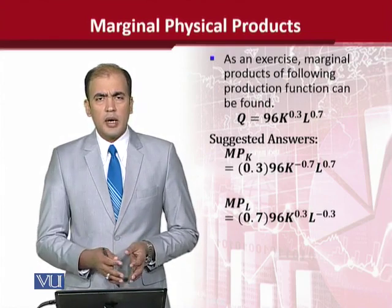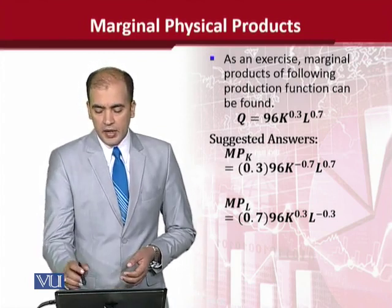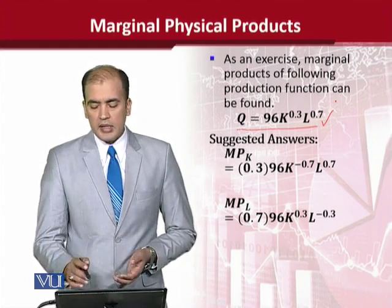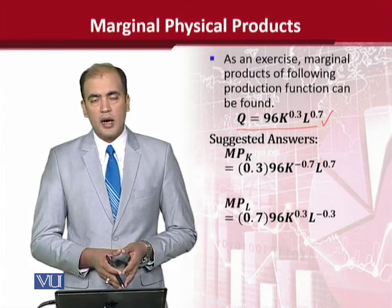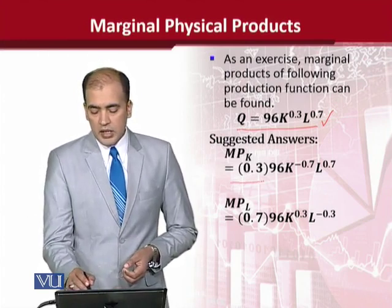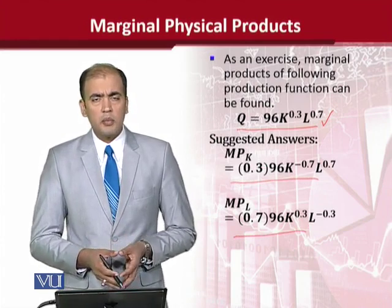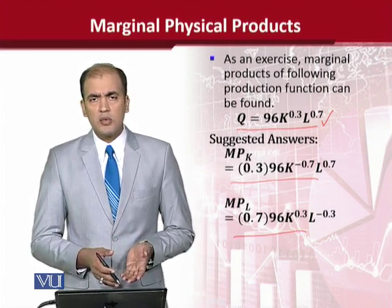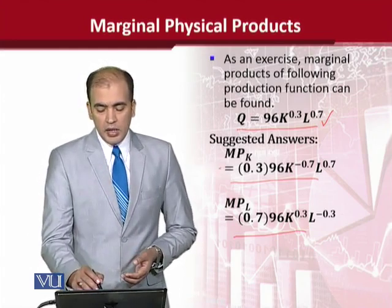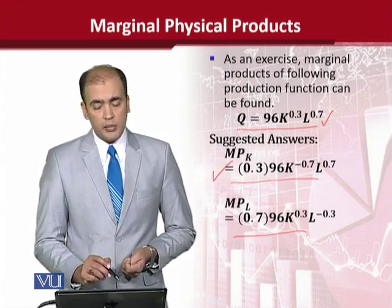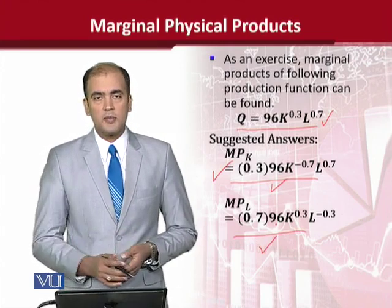Now we should also do a numerical exercise, which I will show you partially and the rest you can do as practice. In this case you have a numerical example of the production function with capital and labor, and you can determine the output. A simple method is to take the derivative firstly with respect to labor, or capital, and then with respect to the other variable. Using partial differentiation, the marginal product of capital will be a certain answer, and with respect to labor the answer would be another value.